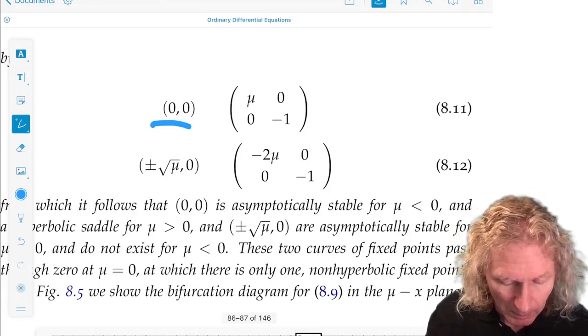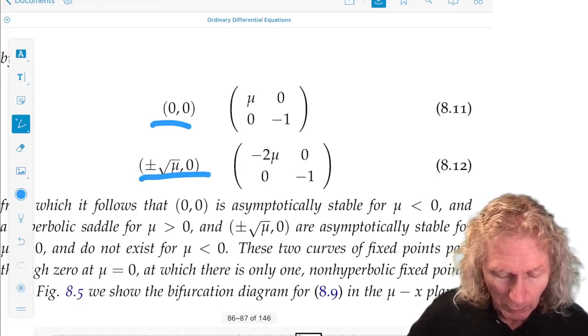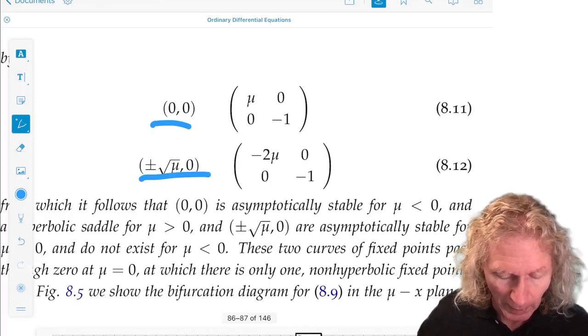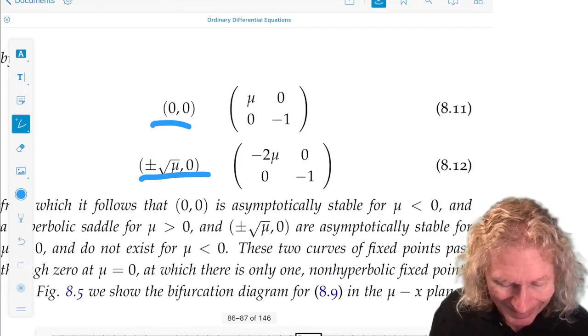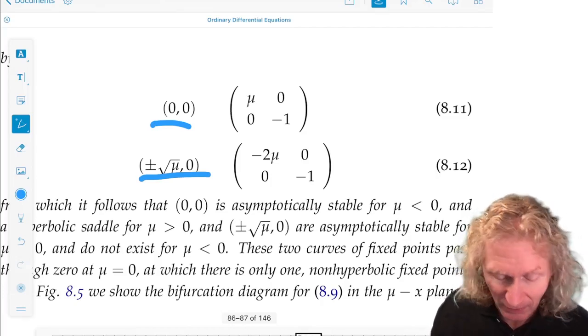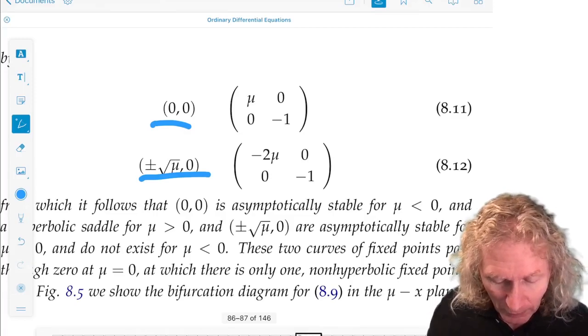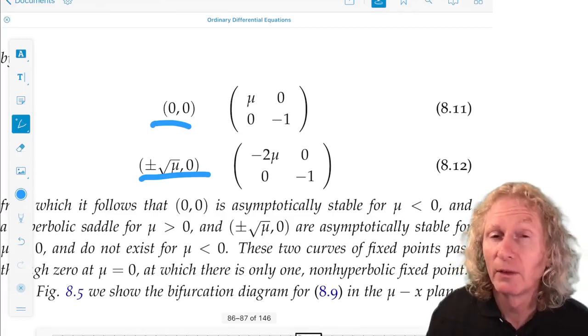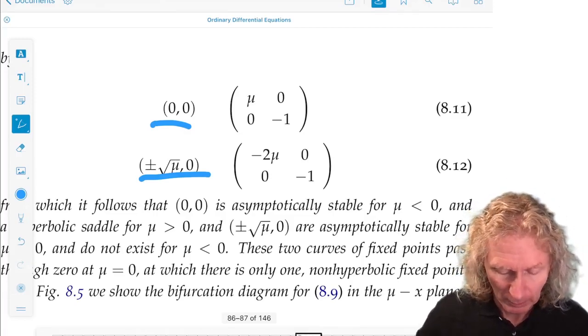And for μ negative, this is a saddle point. And for, sorry, for μ negative, it doesn't exist. For μ positive, it's stable.